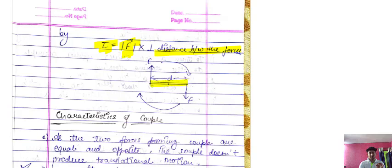This is the distance between the two forces. One force is acting upward and one force is acting downward. So torque will be given by force multiplied by the perpendicular distance between the forces. This is known as the torque.